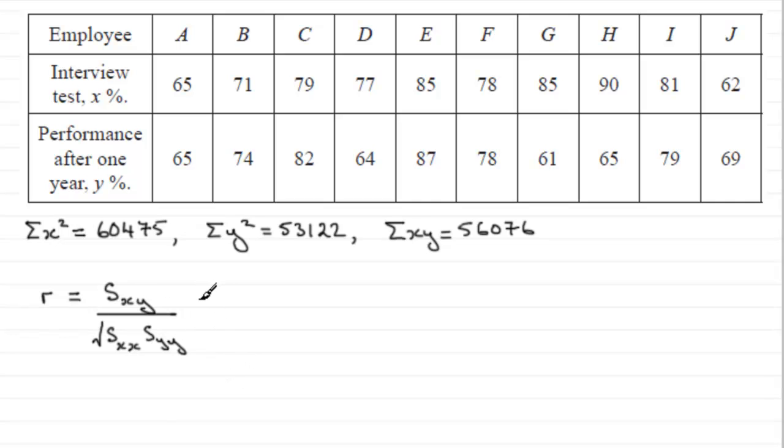Well, we should know these particular results. SXY is, you'll find it in most of the formula books, but I would encourage you to learn it. It is the sum of XY minus sum of X times sum of Y, all divided by N.